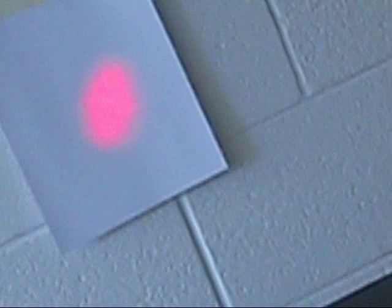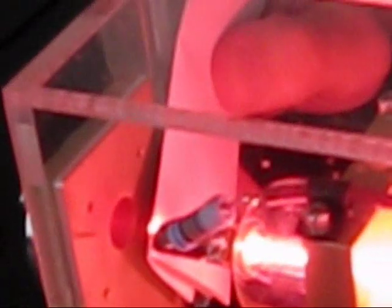But you can see that the modes change because different paths are being blocked as I move the paper in front. And if you block it completely? If I block it completely, it's gone.